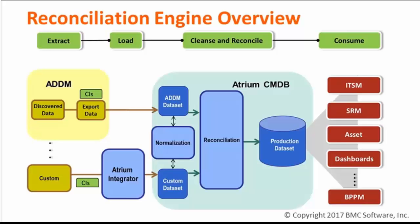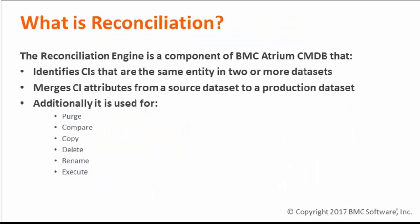This data will be placed in different data sets depending on the source. For example, ADDM data will be placed in the BMC ADDM data set, and any custom data may be loaded through HM Integrator into a custom data set. This data can then be cleaned and improved by the normalization engine. Since it came from different sources, each with different strengths, the reconciliation engine will combine those strengths, resolve all possible conflicts, and merge given CIs into one single CI with enriched attributes in the production data set. Applications such as asset management and service request management will then use this accurate golden data set.